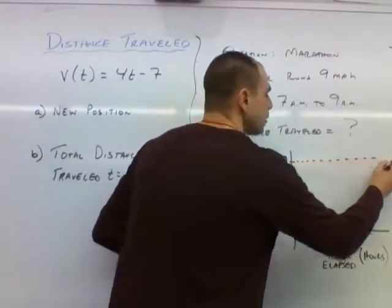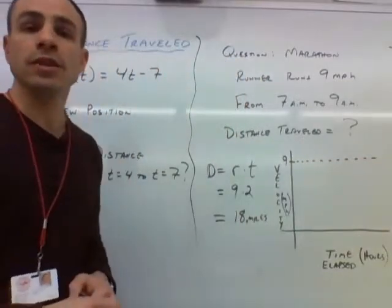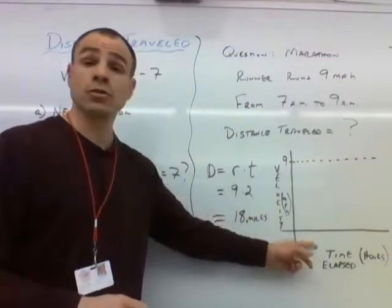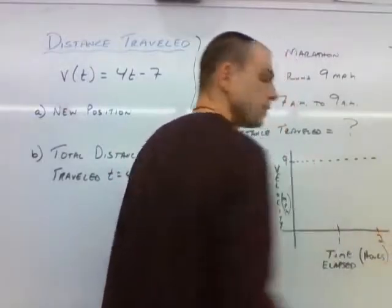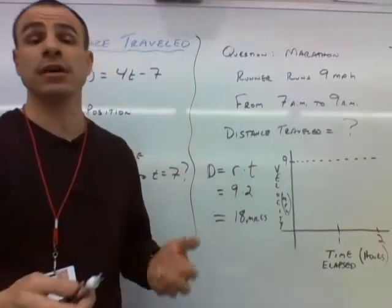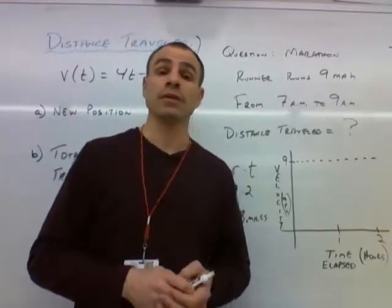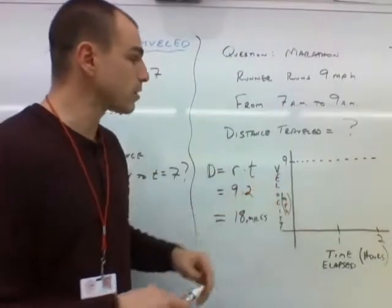So here's 9 up here, and that is her velocity. And that's going for a total of 2 hours. So we see 1 and 2. And this is the question that's being asked on the back side of that first page of the notes. What if we took a look at the graph?